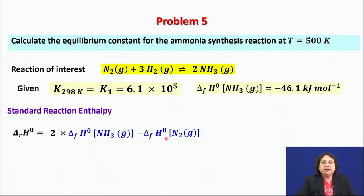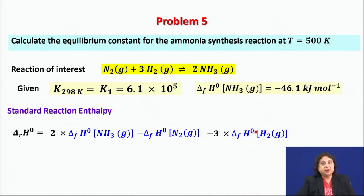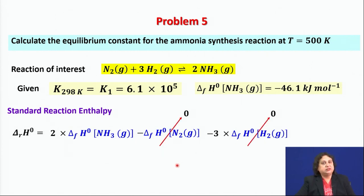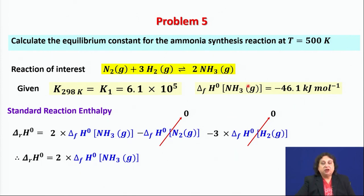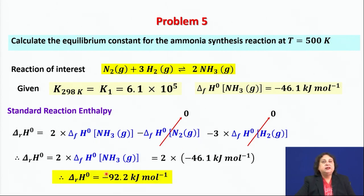We subtract ΔHf°(N₂, g) and 3·ΔHf°(H₂, g), both of which are zero by convention for elemental gases. Therefore, ΔRH°rxn = 2 × ΔHf°(NH₃, g), and from standard thermodynamic tables this turns out to be −92.2 kJ/mol.